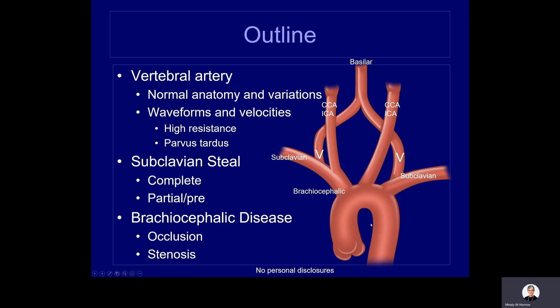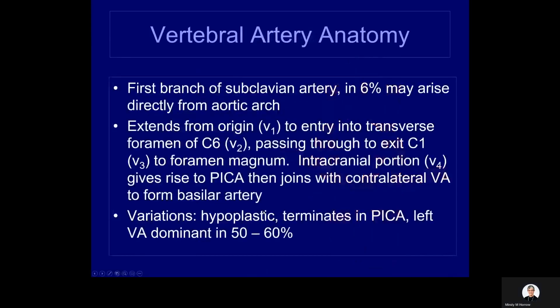We will be using this construct of the aortic arch and great vessels to discuss these findings. The vertebral artery is typically the first branch of the subclavian artery, though in a small percentage it may arise directly from the aortic arch. It extends from its origin into the transverse foramen of C6, then passes to exit C1 at the foramen magnum. It gives rise to the posterior inferior cerebellar artery and then joins with the contralateral vertebral artery forming the basilar.